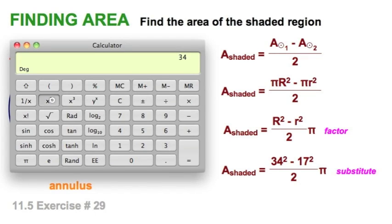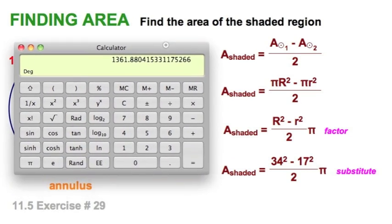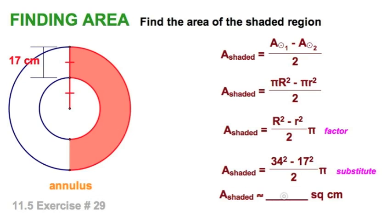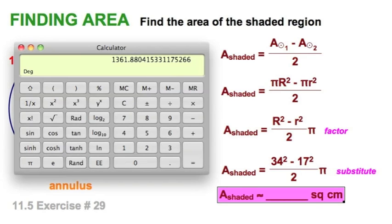We'll take 34 squared. Then we're going to subtract from that. Now, watch out. Make sure your calculator understands order of operations. Please Excuse My Dear Aunt Sally. Let's see if this one does. Minus 17 squared equals, yes, it does. So, that looks pretty good. And I'm going to divide that by 2. So, I've got 433.5. And I'm going to multiply it times good old fashioned pi. Wow! That's a big number. So, it's looking like 1361.9 square centimeters.